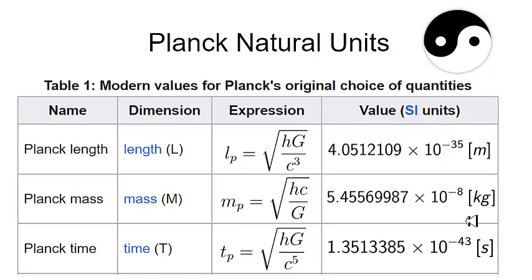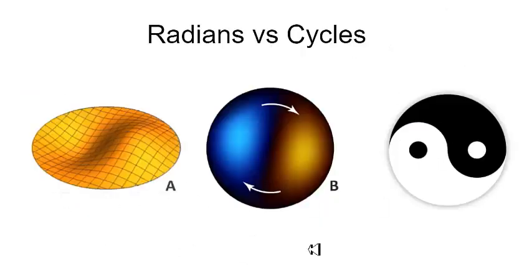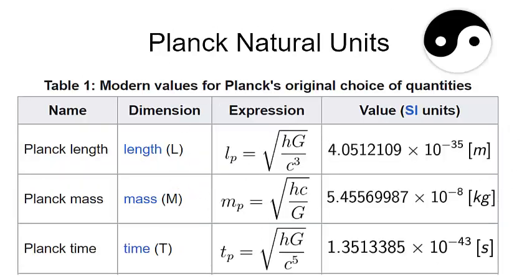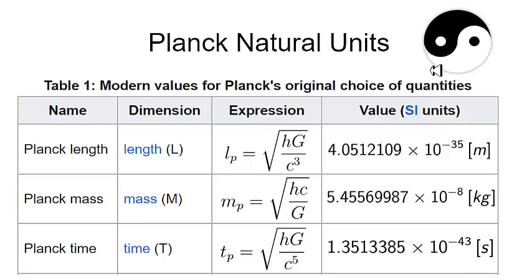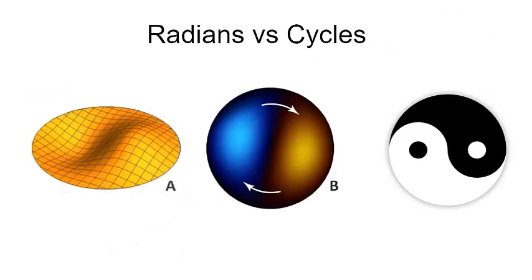As you'll see when I review John Macken's paper, my parameters don't exactly match his. I believe he uses the reduced Planck length as the radius of his model, while I use the non-reduced Planck length as the circumference. I just wanted to do one more video before the official review, and then we'll see what we can do to coordinate John's language with my language. I hope you're having a good day, and I'll be back.